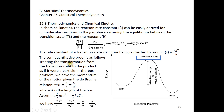We treat the transformation from the transition state to the product as if it were a particle in a box. Using the de Broglie relation, the momentum of the motion is mv = h over λ, and λ is approximately A, the length of the box. So mv is approximately h over A semi-quantitatively, where A is the length of the box.